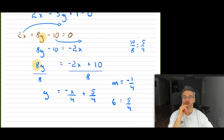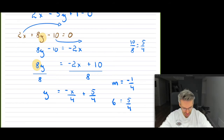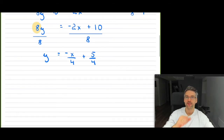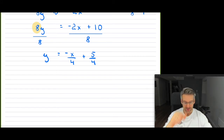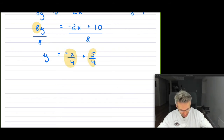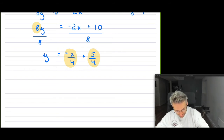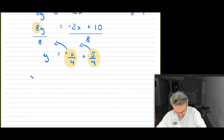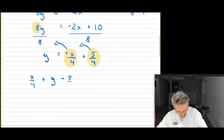What if we wanted to go in reverse — starting from the Y equals MX plus B form and converting to standard form? You're going to move everything to the left-hand side. Starting from slope-intercept form, shift all terms so nothing is left on the right-hand side, and put X first. Moving those terms over, you get X over 4 plus Y minus 5 over 4 equals zero.